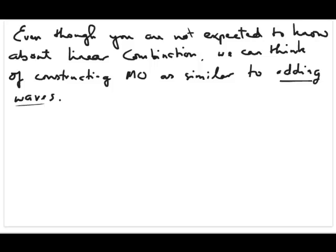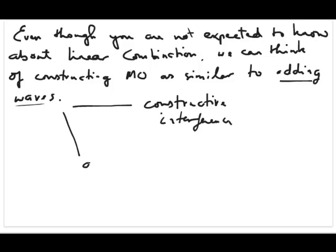When you try to add waves, this process is called interference, and you can have two types: constructive interference or destructive interference. We use these two ideas of constructive and destructive interference to show how you get a specific type of molecular orbital as a result of adding the waves from the atomic orbitals.